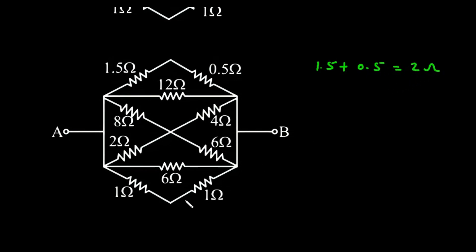Similarly, here we can see this 1 Ohm and this 1 Ohm are connected in series. So it will be 1 plus 1, which is again 2 Ohm. So what we can do — we can replace these two by 2 Ohm and these two by 2 Ohm.